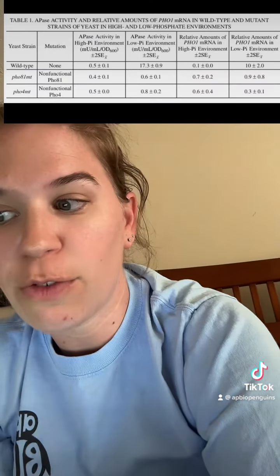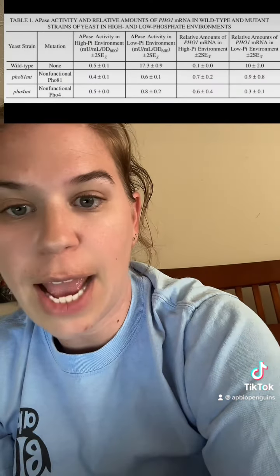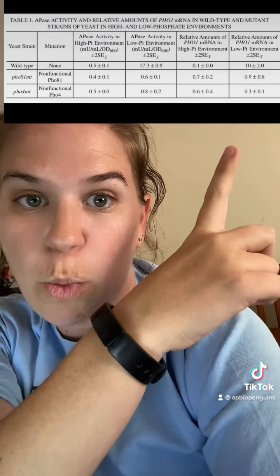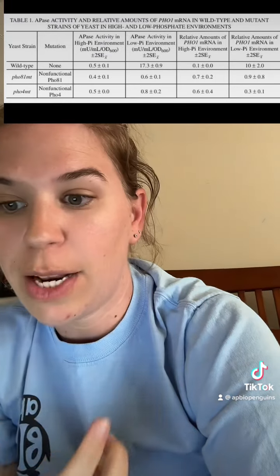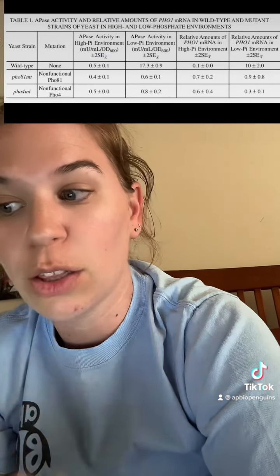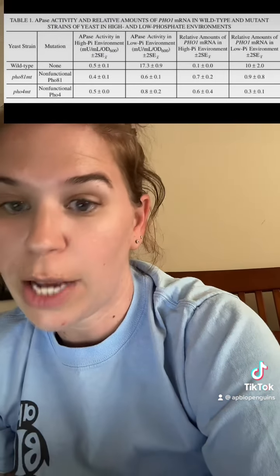Using the data, we're supposed to find the strain with the highest amount of relative mRNA. As you can see, that would be the wild type when found in low inorganic phosphate, because it has a value of 10 plus or minus 2.